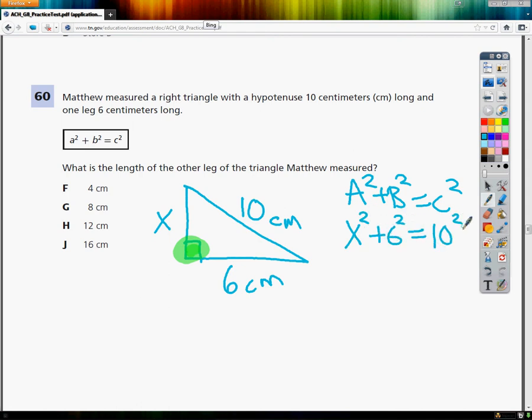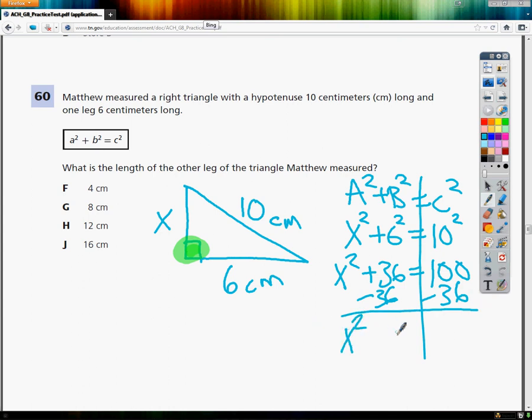That other side would be 10 squared. So I'm doing x squared here. 6 squared is 36. 10 squared is 100. I'm just solving an equation at this point. I'm going to subtract 36 from both sides because I need to get x all by itself. Bring down x squared. 100 minus 36, last time I checked was like 64. So I've got 64.